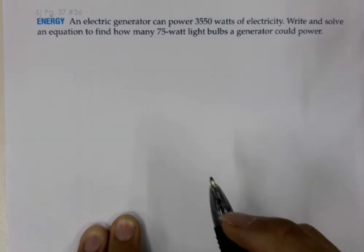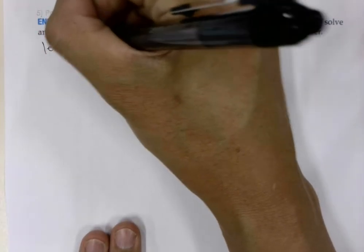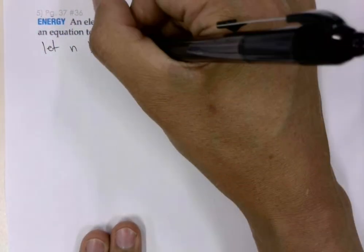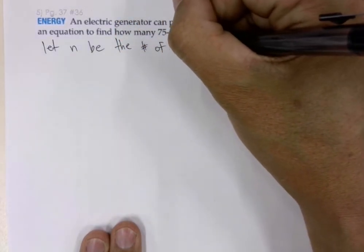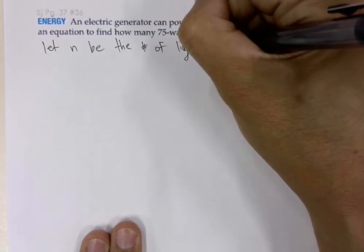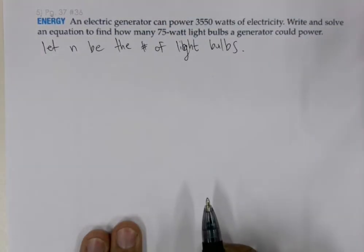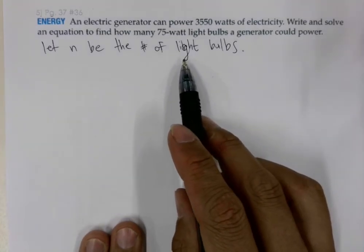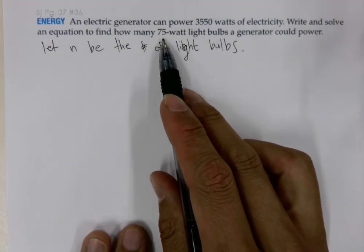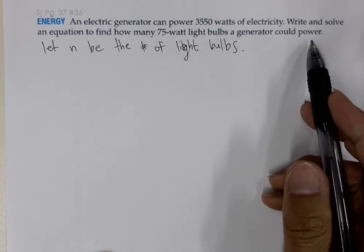We can begin this problem by creating a variable. Let N be the number of light bulbs. And what type of light bulbs are we talking about? We are talking about the 75-watt light bulbs that this generator could power.